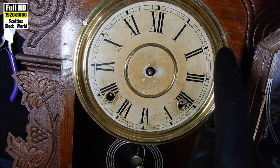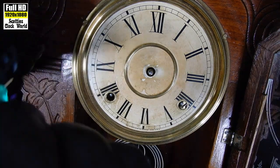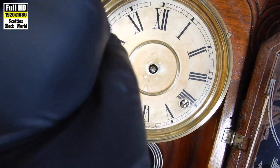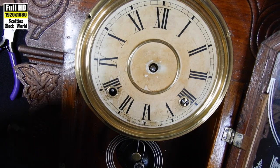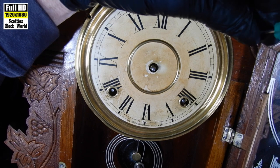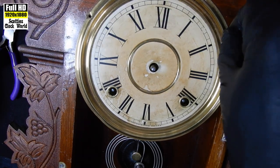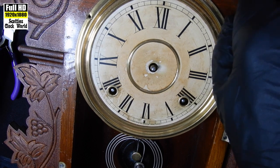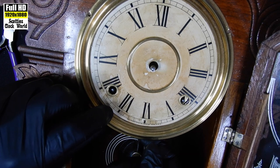Now we remove the dial. There's two screws, one here, one there. So we'll undo those screws. Put them aside. Do the second one. That's done.